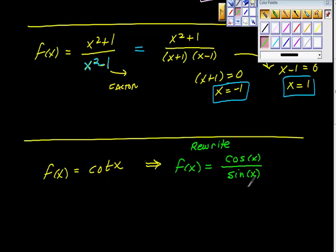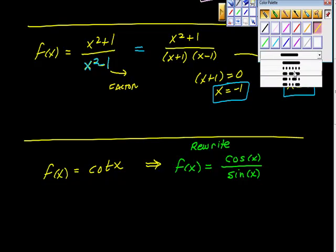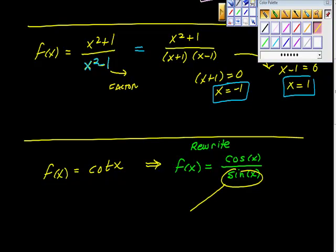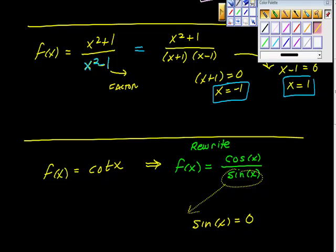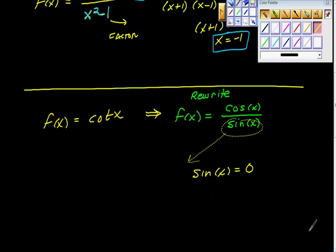So now we look at this and we ask ourselves, when is sine of x? So I'm going to do the same thing I did before. I'm going to pull out this piece here. I'm going to pull out this piece right here. I'm going to ask myself the question here. I'm going to say, well, when is sine of x equal to zero? And then what we have to know here, we have to know here is when is sine of x equal to zero?